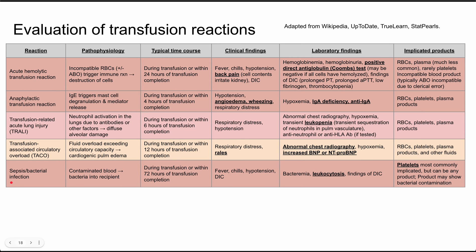Another severe transfusion reaction is sepsis or bacterial infection. The blood products were contaminated and bacteria gets into the recipient. This can present up to within 72 hours of transfusion completion. Clinical findings include fever, chills, hypotension, and DIC. Lab findings unique here include leukocytosis, just like in other causes of sepsis, and bacteremia on blood culture. DIC findings include prolonged PT, prolonged PTT, low fibrinogen, and low platelet count. Platelets are most commonly implicated, though this can happen with any blood product. The products might even show bacterial contamination after they've already been given.